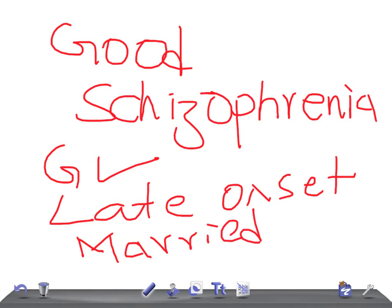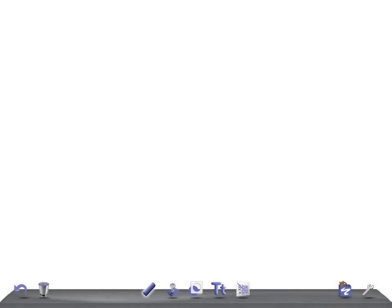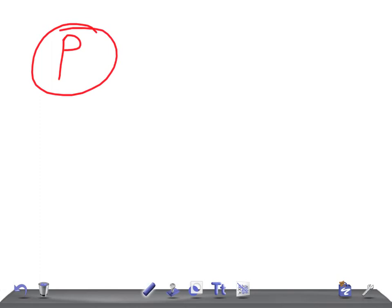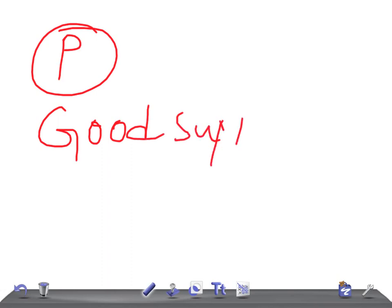Additional good prognostic factors include: the presence of an obvious precipitating factor, a family history of mood disorder, the presence of positive symptoms such as delusions, hallucinations, bizarre behavior, and thought disorder, and having a good support system.